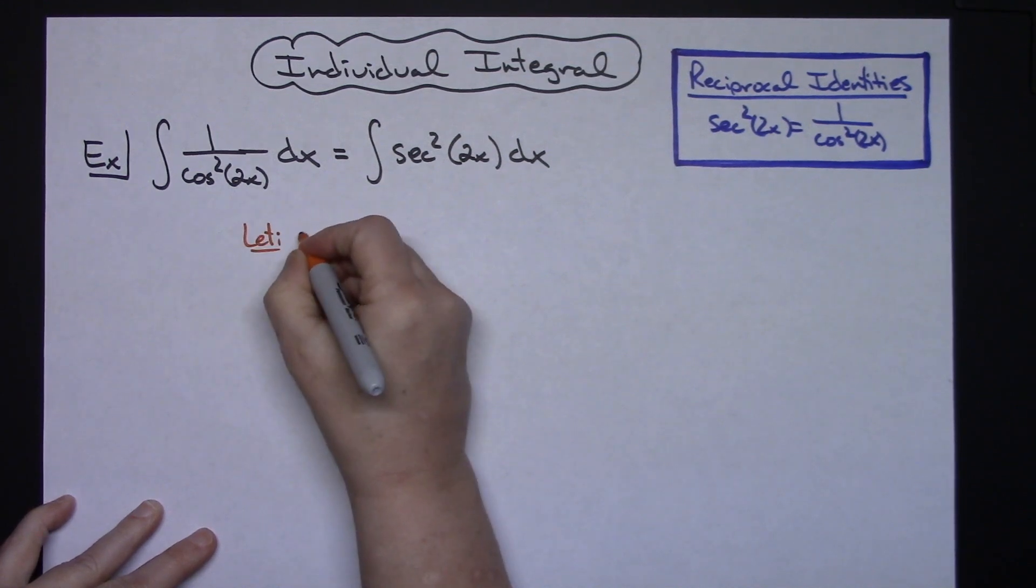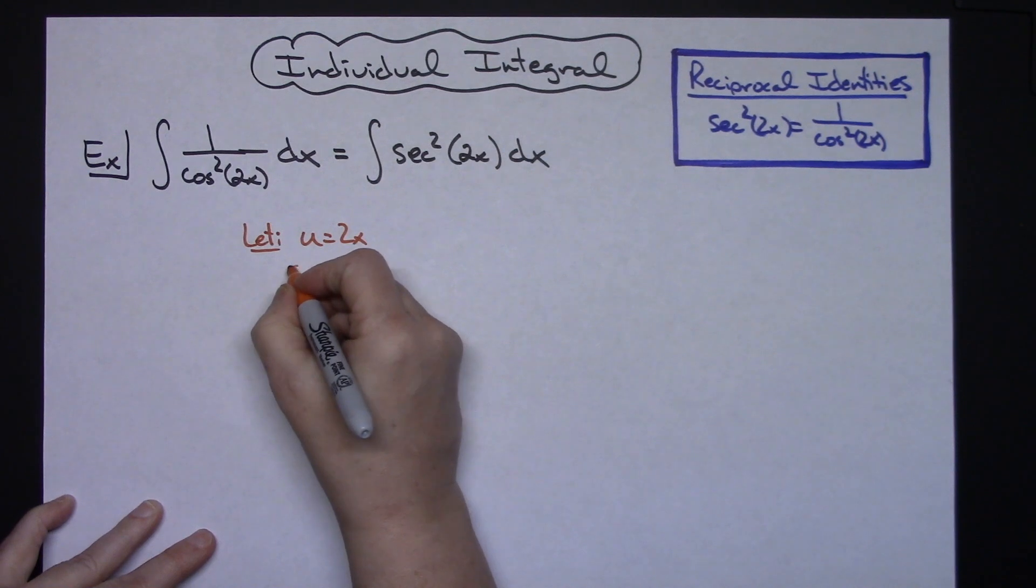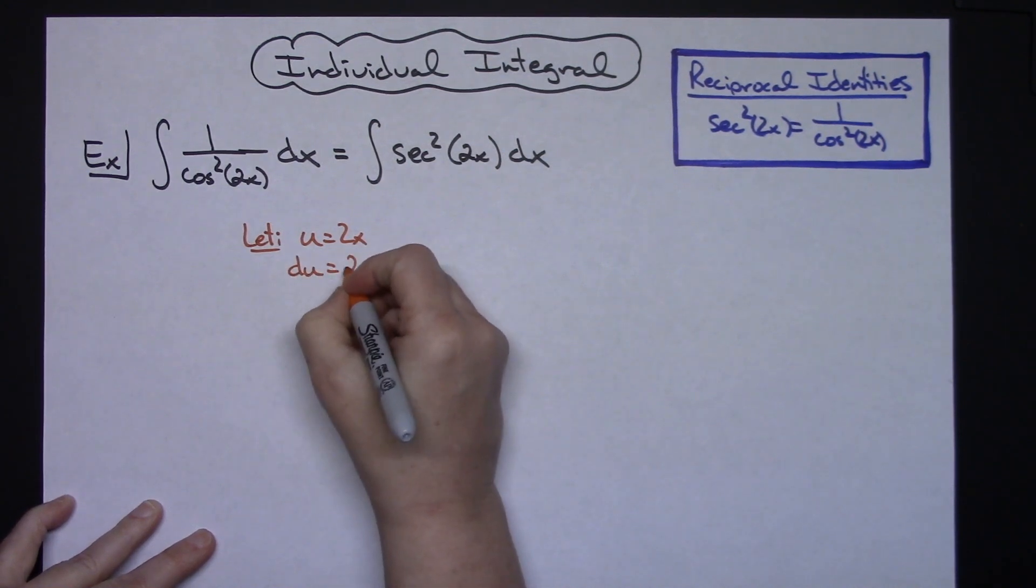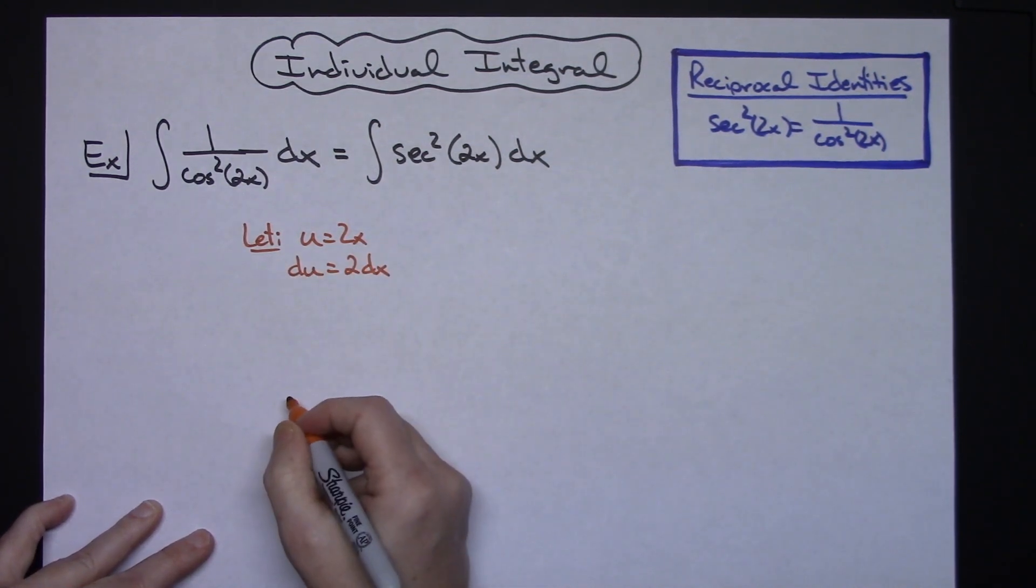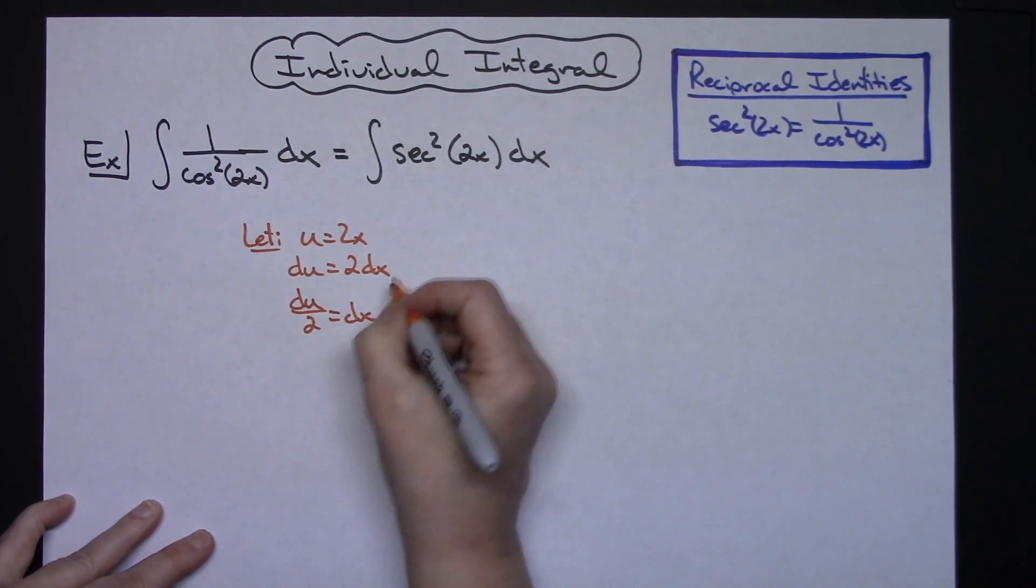So we're going to let u equal 2x. We're going to take the derivative of both sides, so we'll have du is equal to 2 dx. I'm going to divide both sides by 2, so I'll have du over 2 is equal to dx.